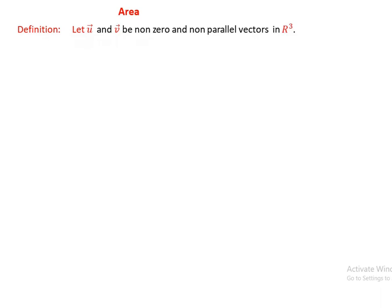Let u and v be non-zero and non-parallel vectors in R3. Then the area of the parallelogram with sides u and v is given by A, the norm of u cross v. That is, area equals norm of u cross v, which equals norm of u times norm of v times sine of theta, by definition of the norm of u cross v, where u and v are the sides of the parallelogram.